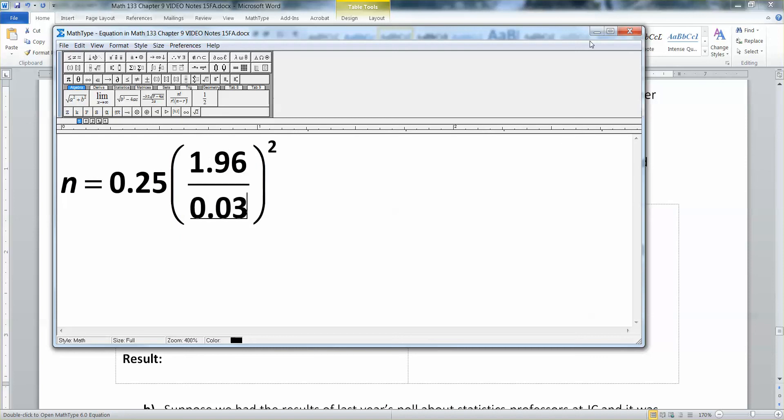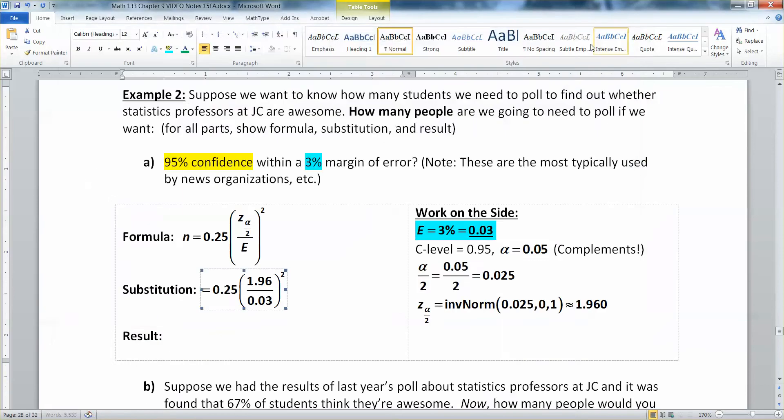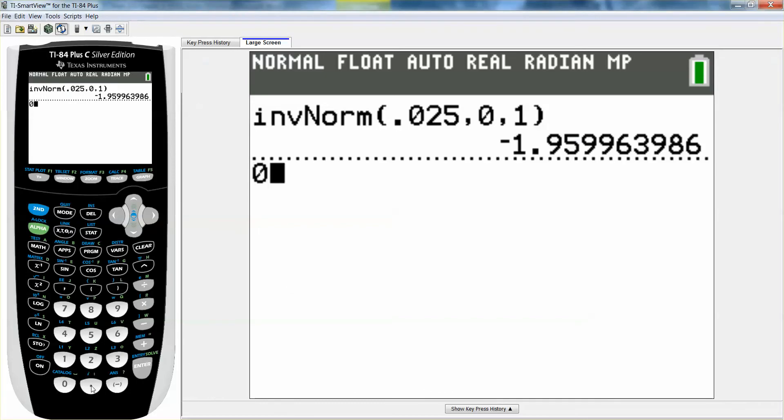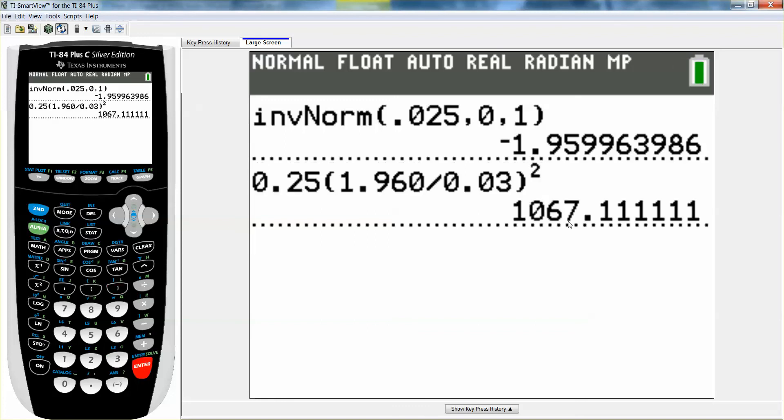That would be 0.25, and then we said this was 1.96, we just found it, and this is 0.03. So we just need to find what that is. So let me grab a calculator. 0.25 parentheses 1.960 divide by 0.03 close parentheses square it. Enter. And I get 1067.1 repeating.